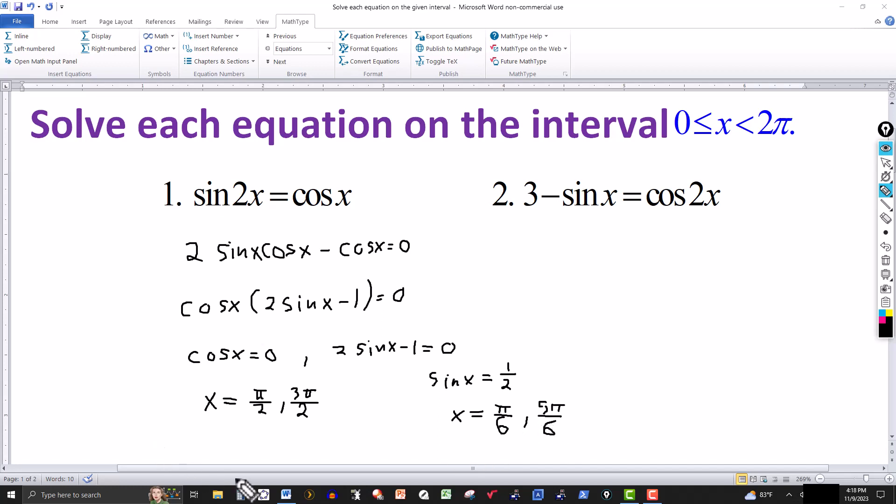So we have four answers in the interval. Keep in mind that if they want the complete solutions, you simply add the period of that function, in this case 2π, to each of these, multiples of 2π, n times 2π. But in this case, we only want the answers in the interval from 0 to 2π. x = π/6, π/2, 5π/6, and 3π/2.